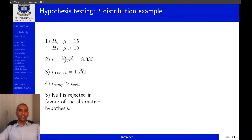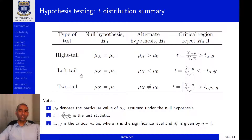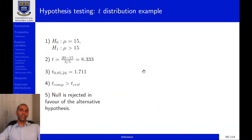Going back to our slide, that is indeed the critical value. Now we compare the two: our computed test statistic is 8.333 and our critical value is 1.711. For a right-tailed test, we reject H0 if the test statistic is larger than the critical value. Since 8.3 is larger than 1.7, we reject the null hypothesis.